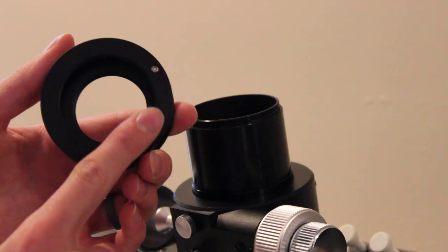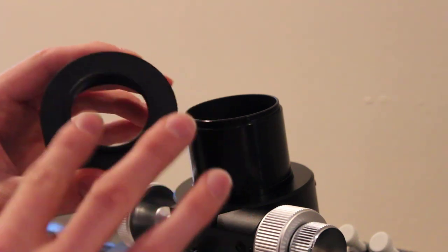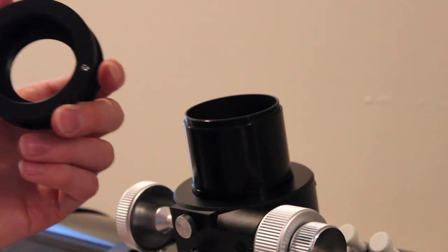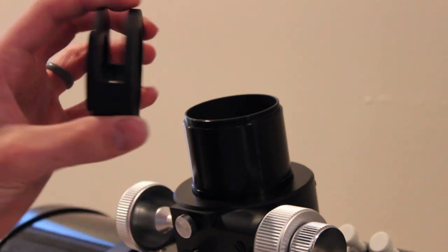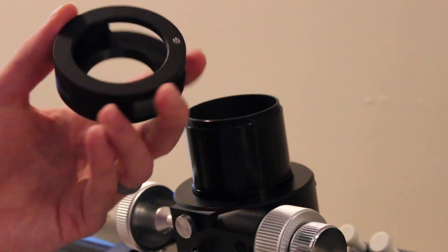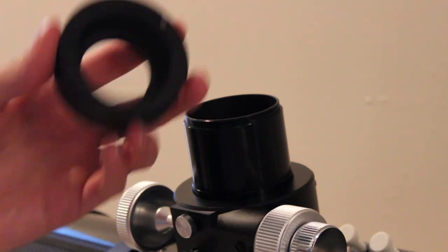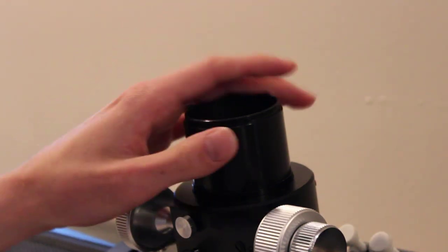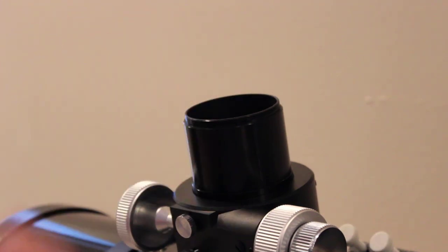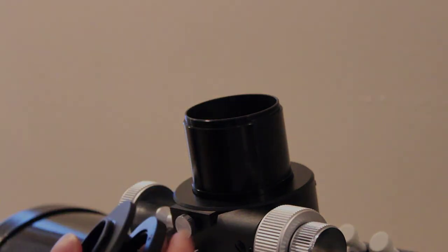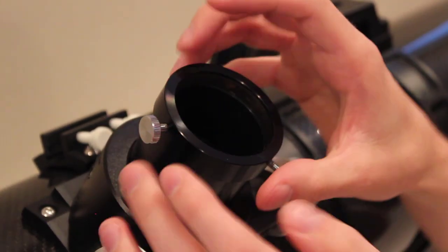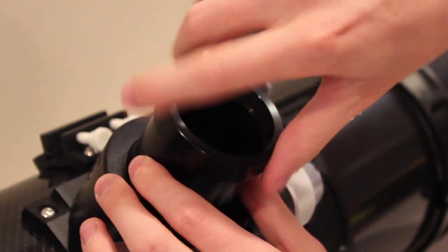So this is a ZWO filter drawer. It has 48mm female threads and 42mm male threads. They also sell a 54mm version, and the reason I didn't get that is I use this on my Schmidt-Cassegrain as well. So I can use this on multiple telescopes, but if you only plan on using it on a 54mm threaded Newtonian, you certainly can get a 54mm version. So anyway, I just remove the 2 inch compression ring visual back.